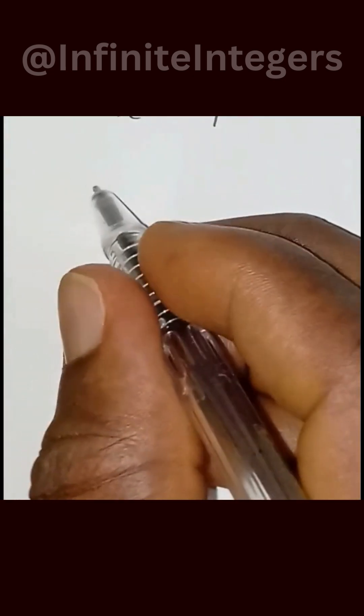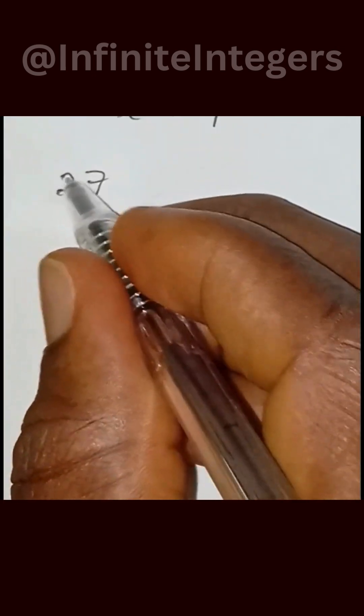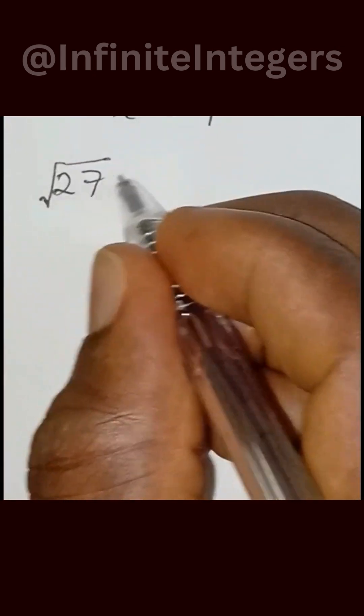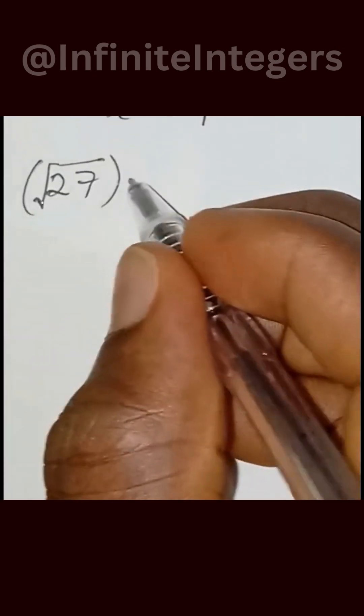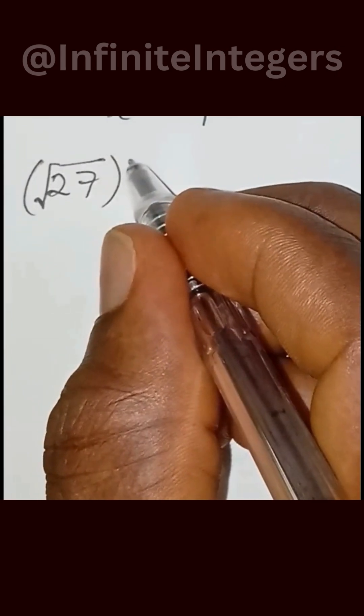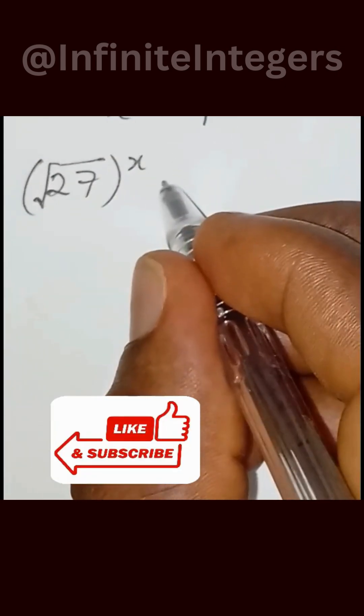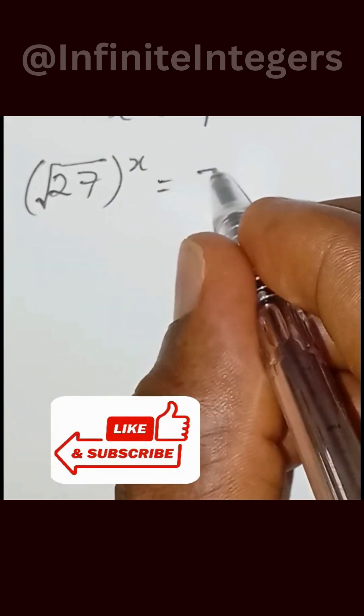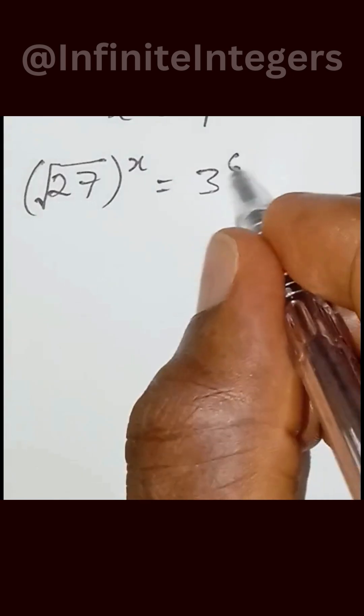Okay, from here we have 27. Square root of 27 in brackets to the power of x equal to 3 to the power of 6.